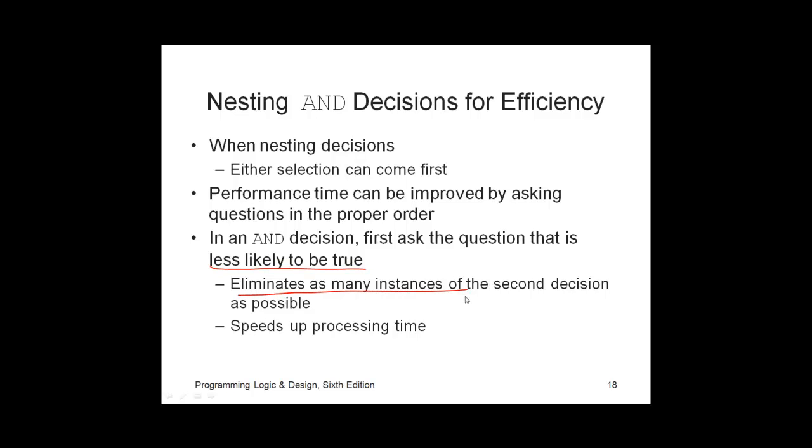Less likely to be true. Why? Well, because that would eliminate the necessity of asking the second question. If we don't have to ask both questions every single time, isn't that going to save time? Yes, it's going to potentially speed up processing time. So, if the first question is most likely to be a no, we don't even have to ask the second question. So, with AND logic, the first question to ask is the question that is most likely to be false, or, as they say here, less likely to be true.